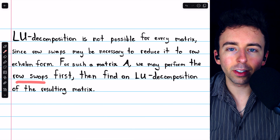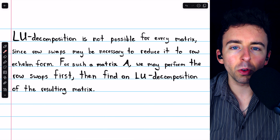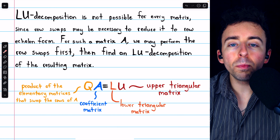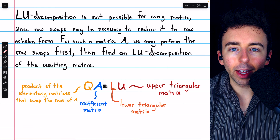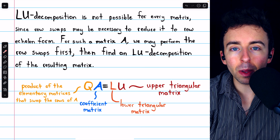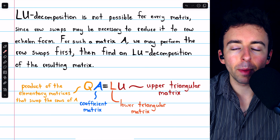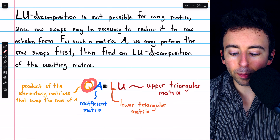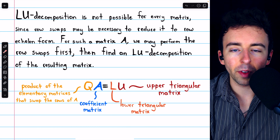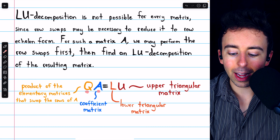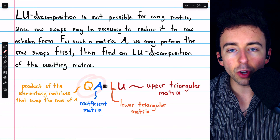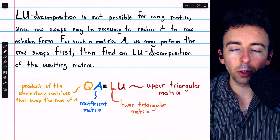But how does this row swapping turn into the new PLU decomposition? The idea is that those row swaps we have to perform on A would be performed by multiplying by the appropriate elementary matrices. Row swaps, being elementary row operations, can be performed by multiplying by an elementary matrix. So let's say that Q is the product of all the elementary matrices necessary to swap the rows of A as needed. If we multiply Q by A, we get a matrix QA which does have an LU-decomposition.